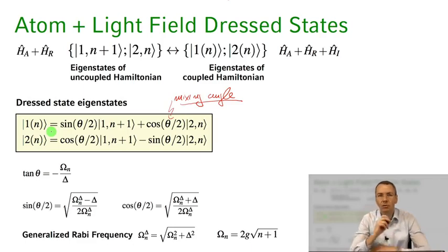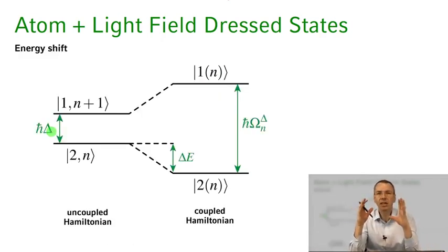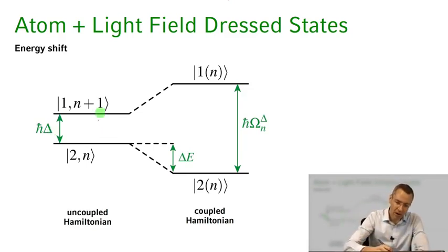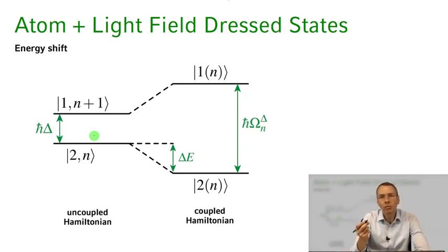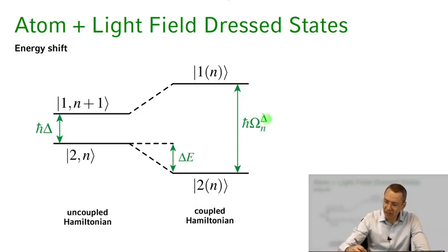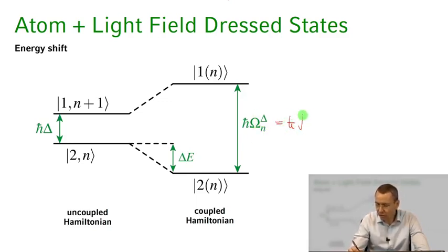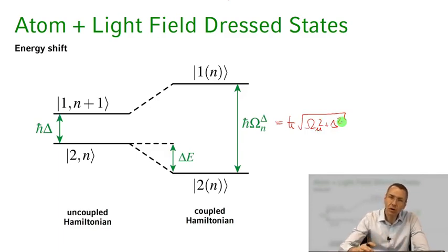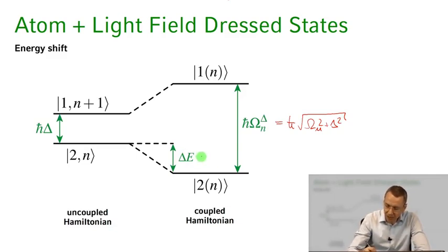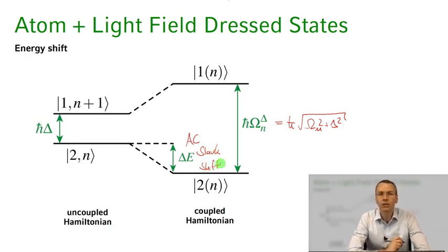These are the eigenstates when we turn on the interaction between the light field and the atom. If we start with no interaction, slightly blue detuned, then turn on the interaction, we form the new eigenstates |1(n)⟩ and |2(n)⟩. They are shifted in energy — their new energy spacing is given by ℏΩ_n,δ, the generalized Rabi frequency, which is ℏ√(ω_n² + δ²). This energy shift is what we call the AC Stark shift — an energy shift induced by the oscillatory AC electromagnetic field interacting with our atom.